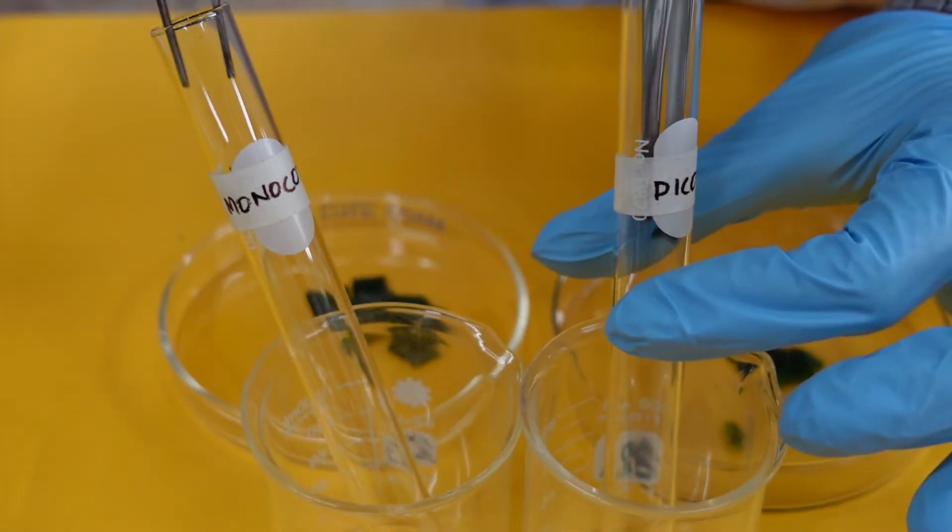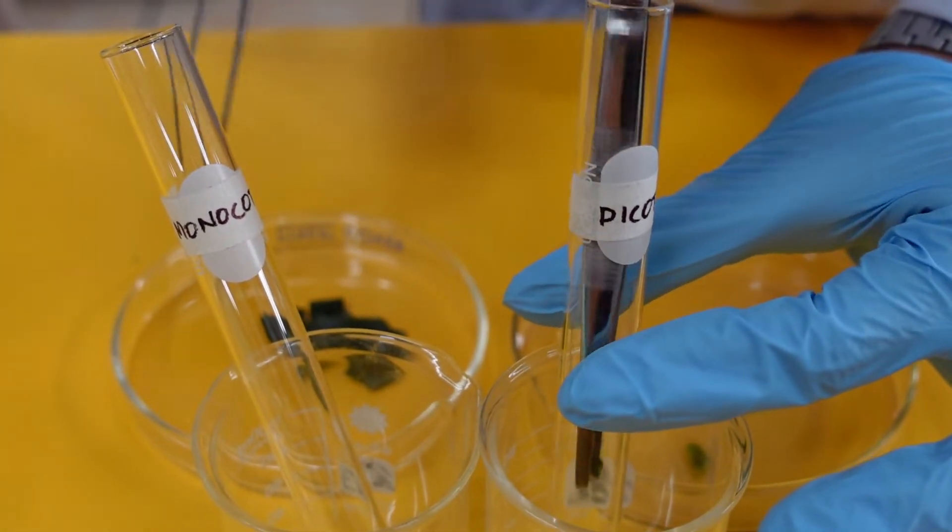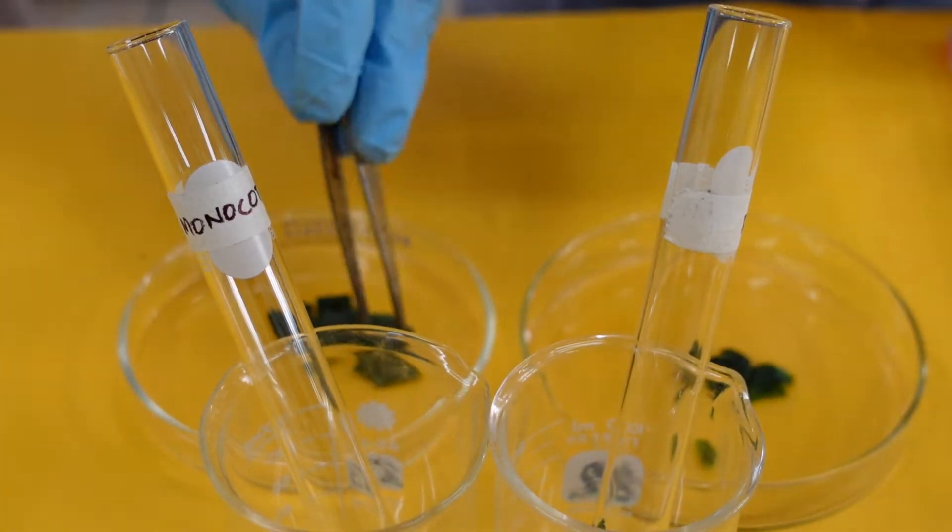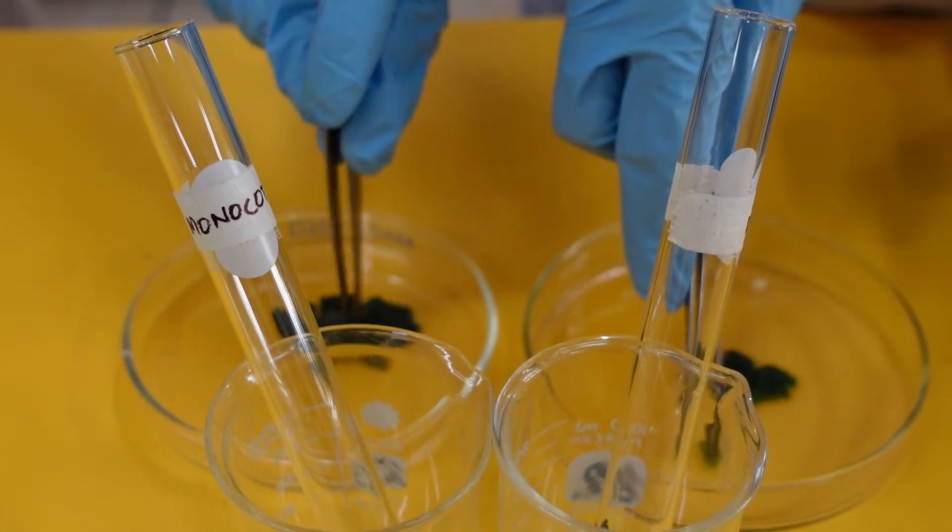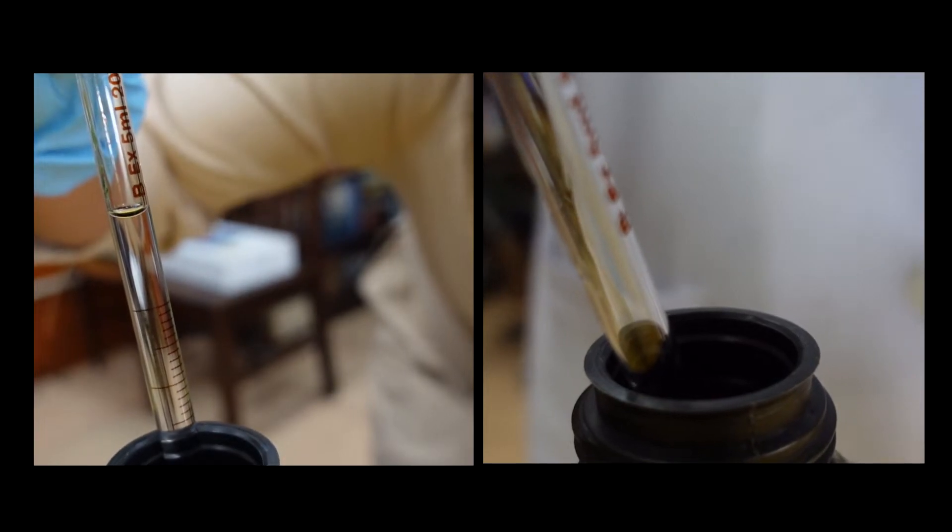Take the boiled leaves we have previously set aside. Place 2 to 3 pieces of these leaves in separate test tubes with 5 ml 95% ethanol.